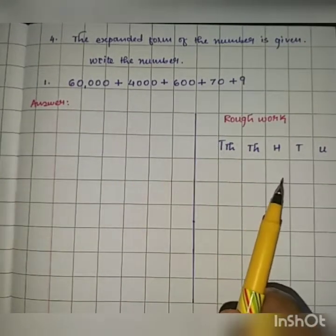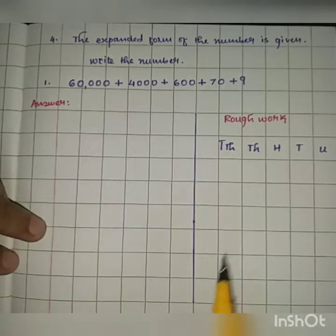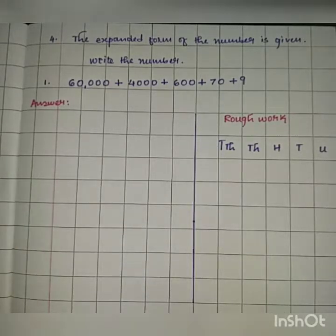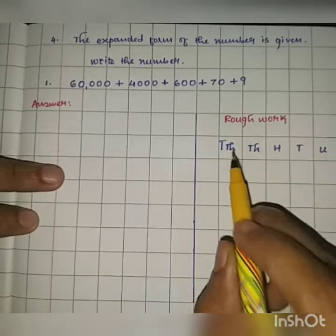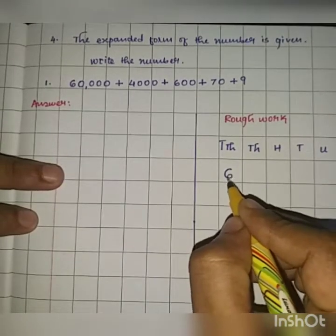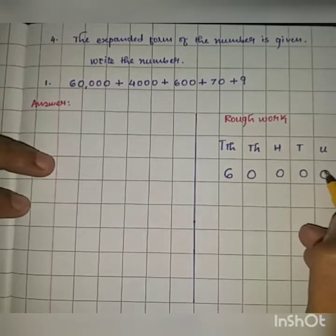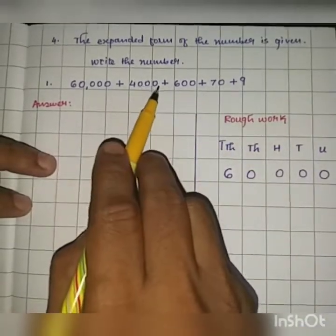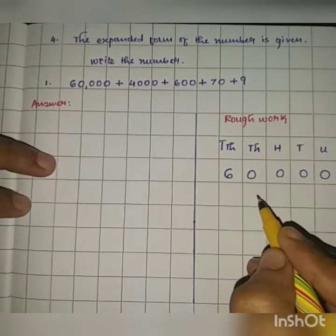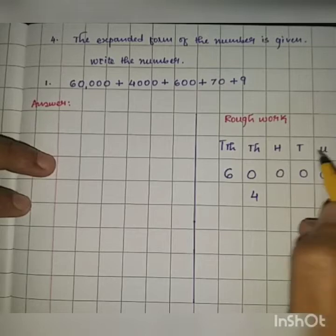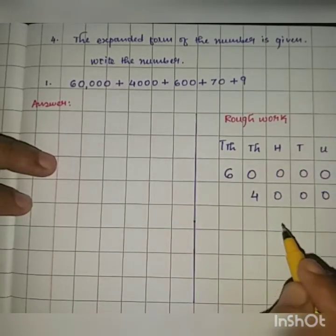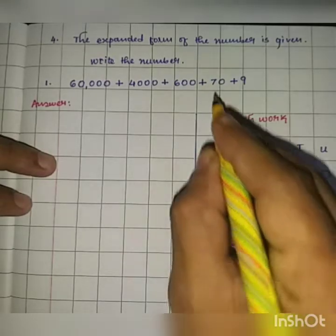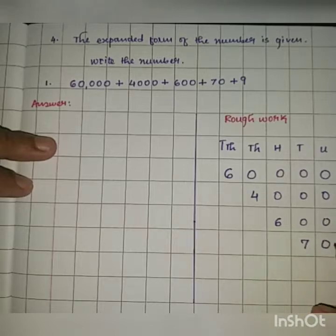Let us write the standard form of the number. In our working column, we write each place value separately. Sixty thousand goes in the ten thousands place. Four thousand goes in the thousands place. Six hundred is in the hundreds place. Seventy is in the tens place — it's a two-digit number. And nine is in the units place.